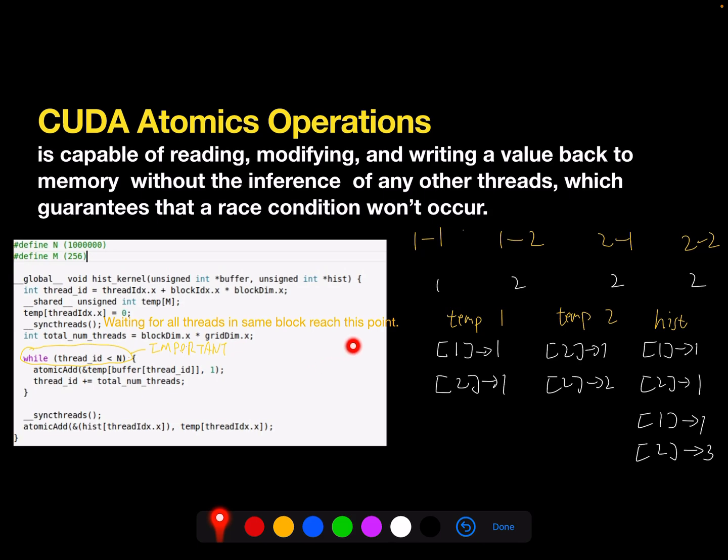Here is the kernel code I write to solve previous problem. Let me expand a bit. So here the input of this kernel function is the data and the output will be the histogram array. First I obtain the thread id.